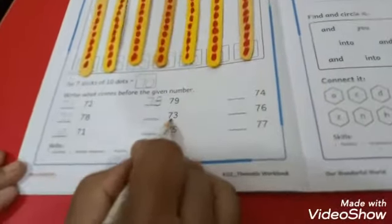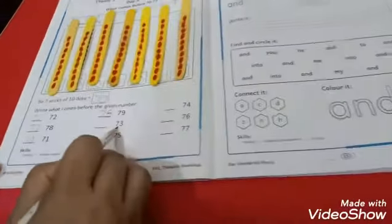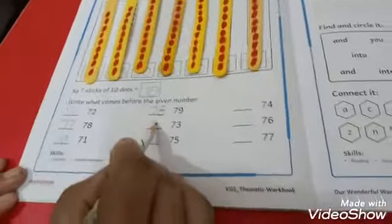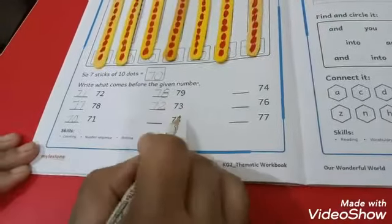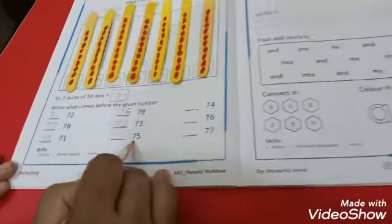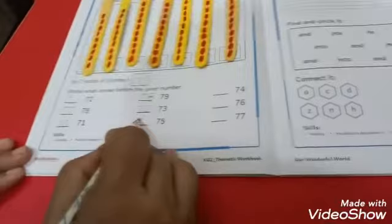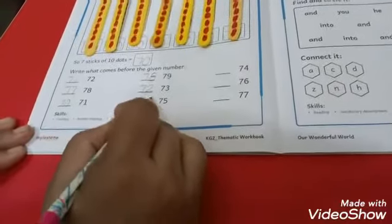Next number is 73. Which number comes before 73? It's 72. We will write here 72. Next number is 75. Which number comes before 75? It's 74. We will write here 74.